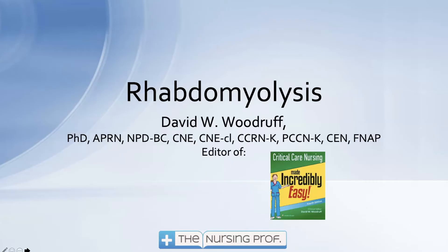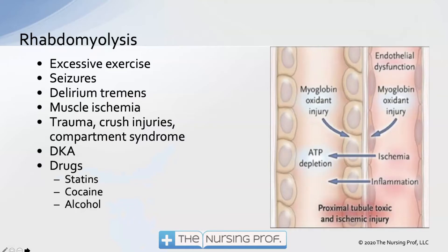Hello and welcome to rhabdomyolysis. My name is David Woodruff. I'm the editor of Critical Care Nursing Made Incredibly Easy, and I hope to make this incredibly easy for you too. What happens in rhabdomyolysis is that a patient, for one reason or another, has muscle breakdown, and the byproducts of that muscle breakdown can end up getting stuck in the kidney, causing renal dysfunction.